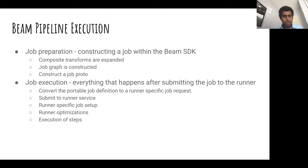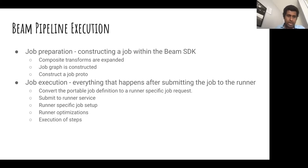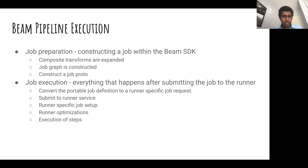We then construct a job graph — each SDK has its own object definition of a graph, which is converted to a portable definition, the standard definition. In job execution, everything happens after submitting the job to the runner. Part of this is converting the portable definition to a runner-specific job request, since each runner has its own definition. We submit this to a runner service. There's usually a runner-specific job setup to provision resources, and the runner will do some optimizations and execute the steps.